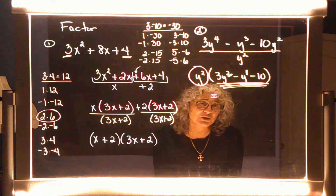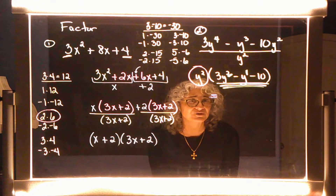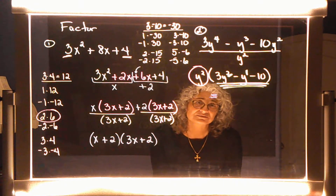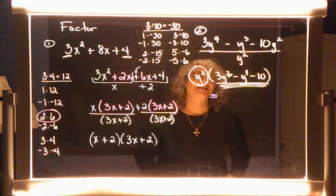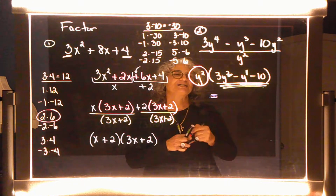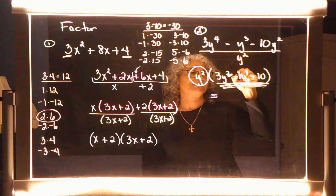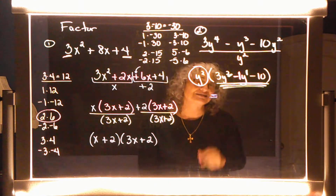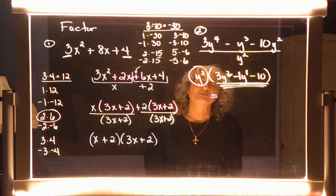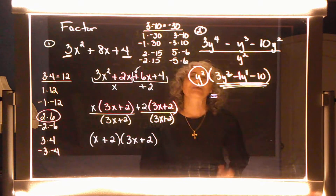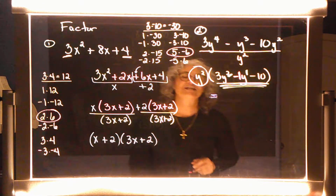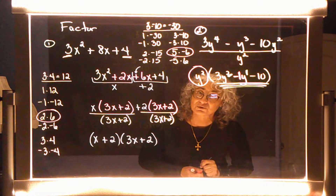So I have eight combinations that multiply to negative 30. How do I know which one to choose? I'm going to choose the combination that adds to a negative one — because that's the number in the middle. Which combination? The positive five and the negative six.